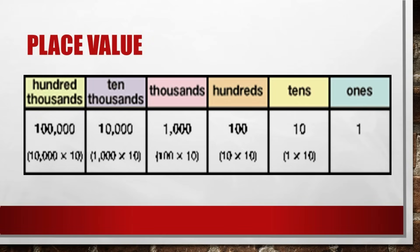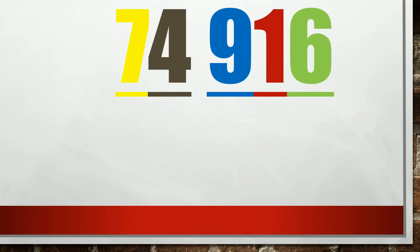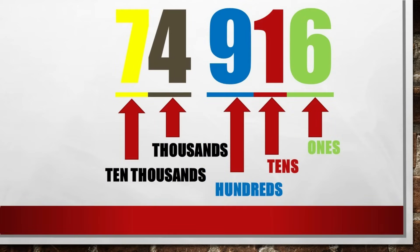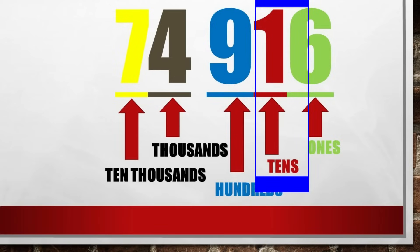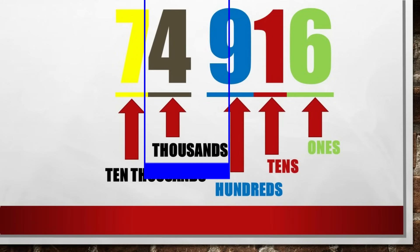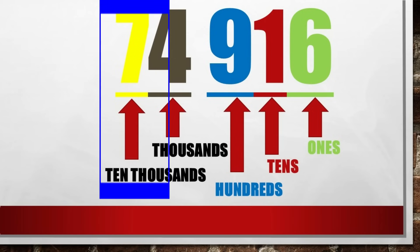Take note that the place value of a digit is always ten times as great as the place value to its right. Let's determine the place value of the given number, seventy-four thousand nine hundred sixteen. Reciting place values from right to left: ones, tens, hundreds, thousands, ten-thousands. Starting from the right: six has the place value of ones, one has a place value of tens, nine has a place value of hundreds, four has a place value of thousands, and seven has a place value of ten-thousands.